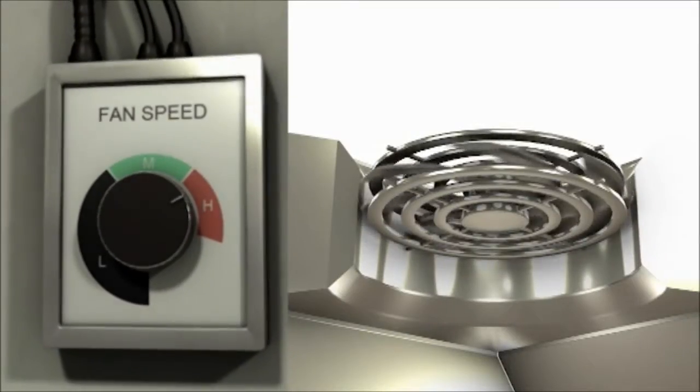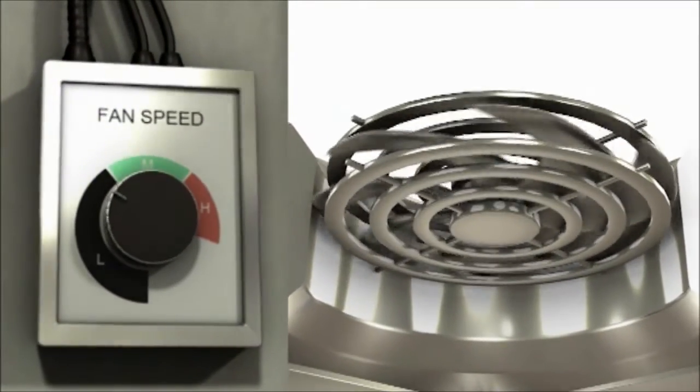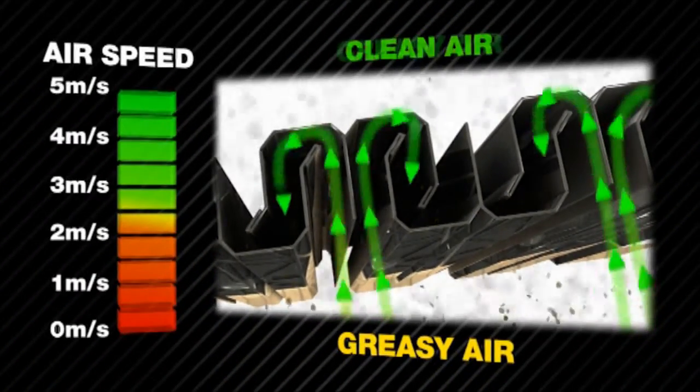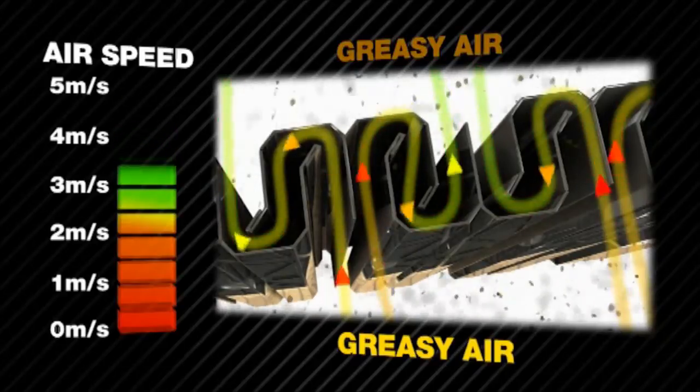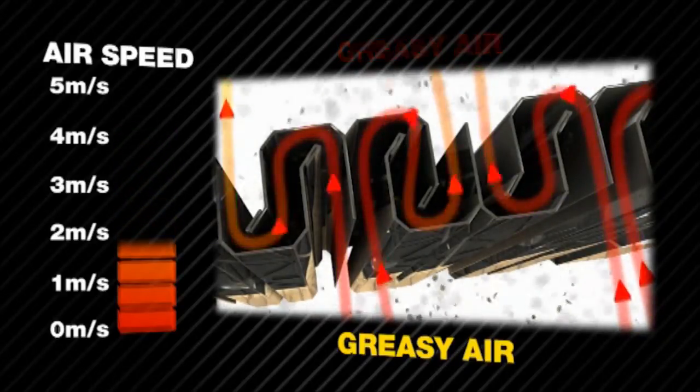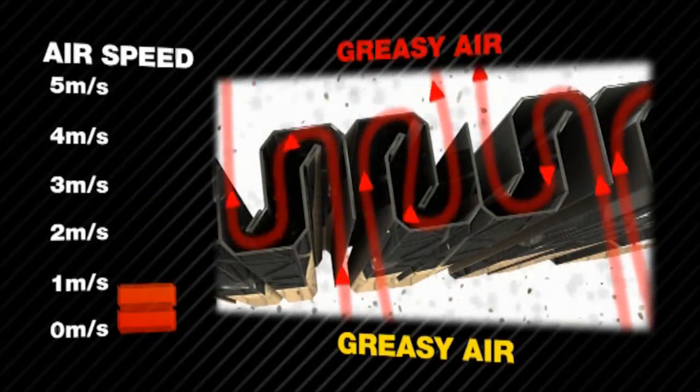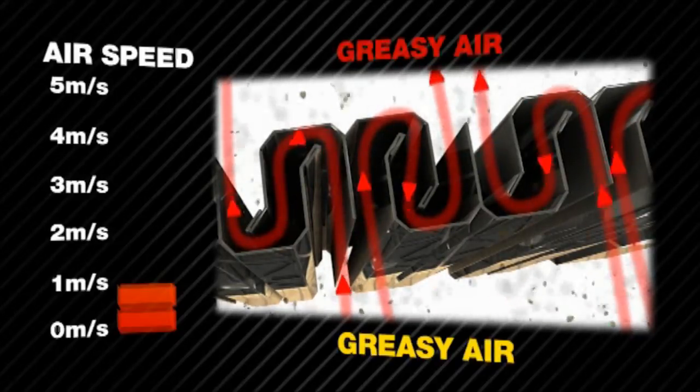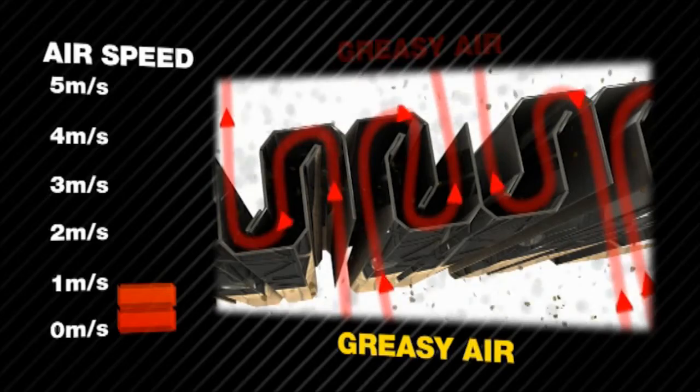Some energy saving systems simply reduce the extract fan speeds at low periods of cooking. This will cause the air speed to drop dramatically through the filter. The result of this reduction in air velocity means the filter no longer works efficiently, as the molecules of grease are no longer forced out of the air stream and onto the inside wall.